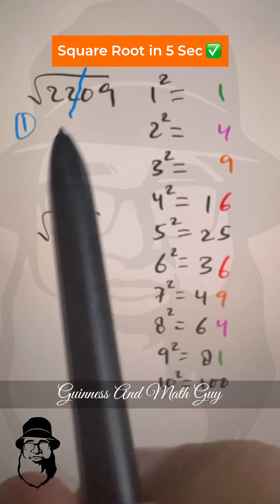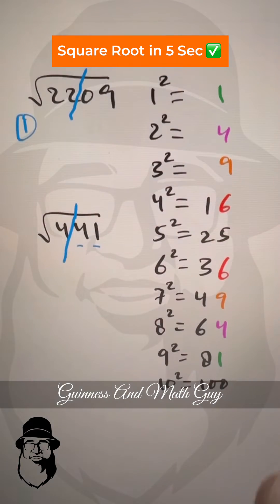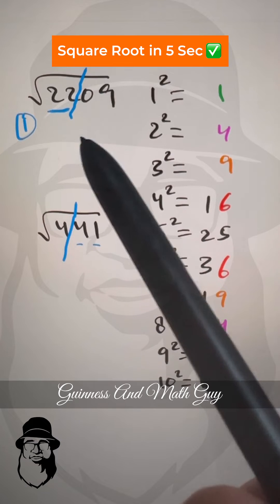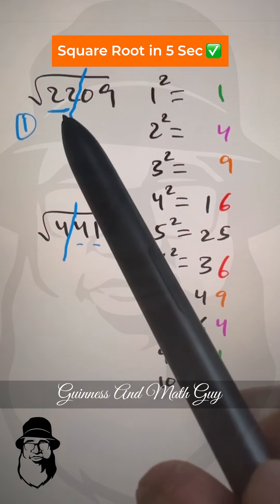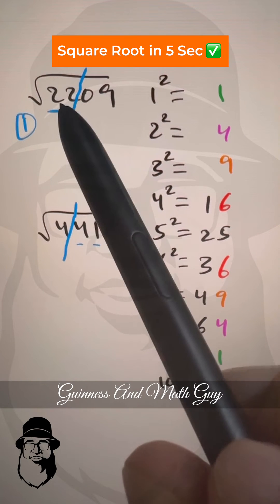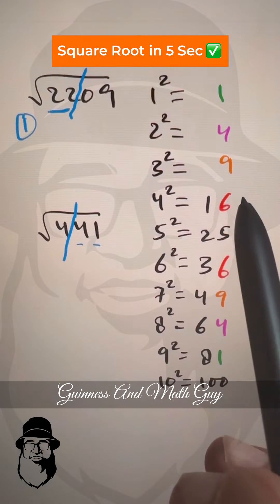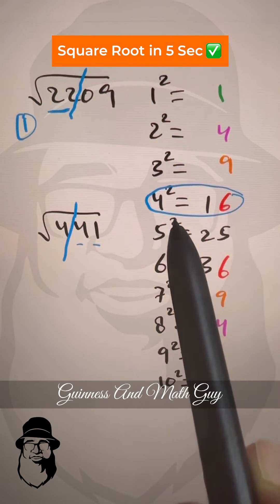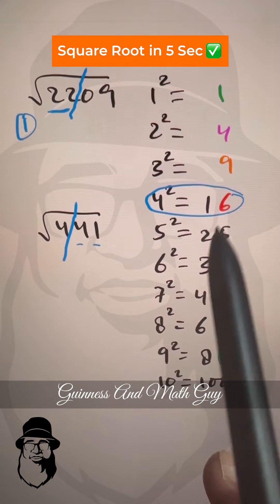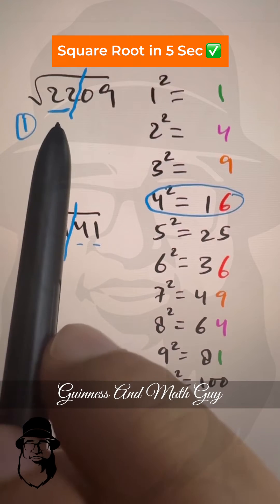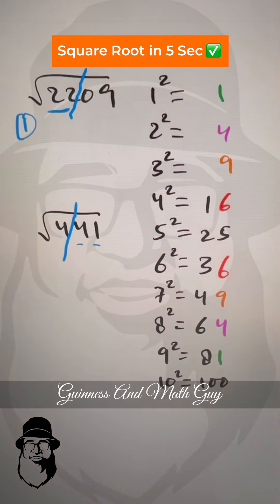Here, look at the left part. Which number squared equals 22 or less than that? The highest here is 4 squared equals 16. If we do 5 squared, it will be 25, which is greater than 22. So we'll take 4 here.